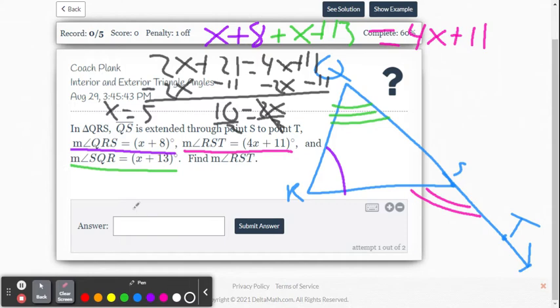So then for our answer, let's see what it wants. It says find the measure of RST. So we're not quite done. If you put 5 in, you're going to get this wrong because it's asking us for the measure of angle RST. I want this is what I want you to be able to do here. So we're going to substitute 5 for x.